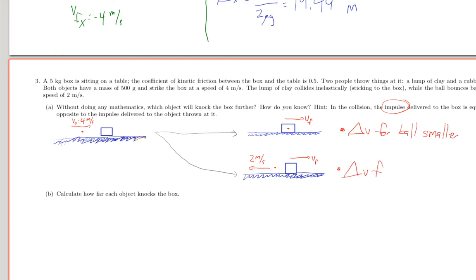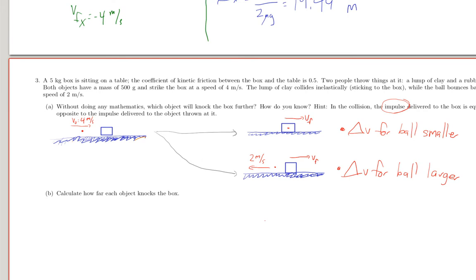Here, delta v for the ball is larger, because the block doesn't just stop it from moving forward. It stops it and sends it back. So this one, the bottom case where the ball bounces back, involves a larger change in momentum of the ball, and thus a larger change in momentum of the box as well.